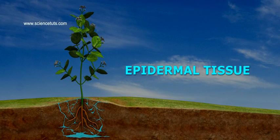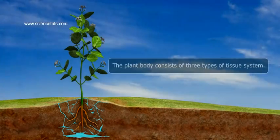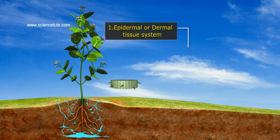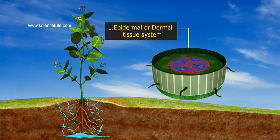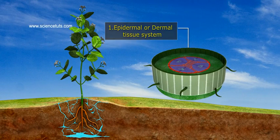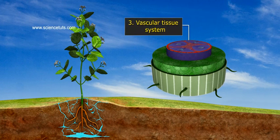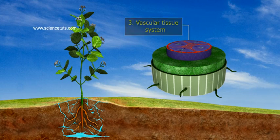Epidermal Tissue. The plant body consists of three types of tissue system: 1. Epidermal or Dermal Tissue System, 2. Ground or Fundamental Tissue System, 3. Vascular Tissue System.